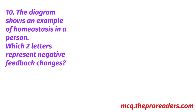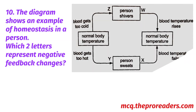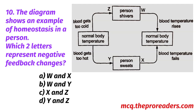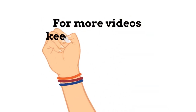The diagram shows an example of homeostasis in a person. Which two letters represent negative feedback changes? A. W and X. B. W and Y. C. X and Z. D. Y and Z. Option A, W and X, is the correct answer.